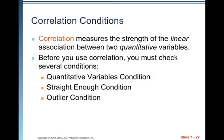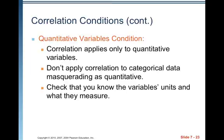Correlation measures the strength of the linear association between two quantitative variables. Before you use correlation, you must check several conditions: the quantitative variables condition, the straight enough condition, and the outlier condition. The quantitative variables condition states that correlation applies only to quantitative variables. Don't apply correlation to categorical data masquerading as quantitative. Check that you know the variables' units and what they measure — make sure you've got quantitative data.